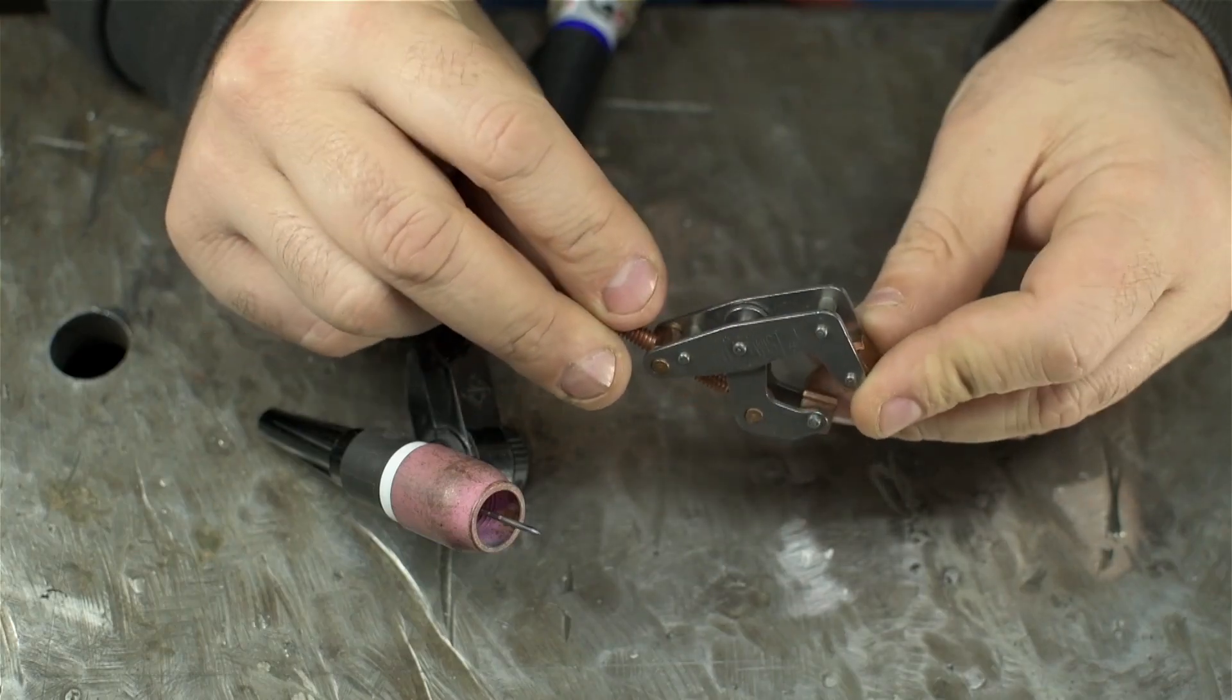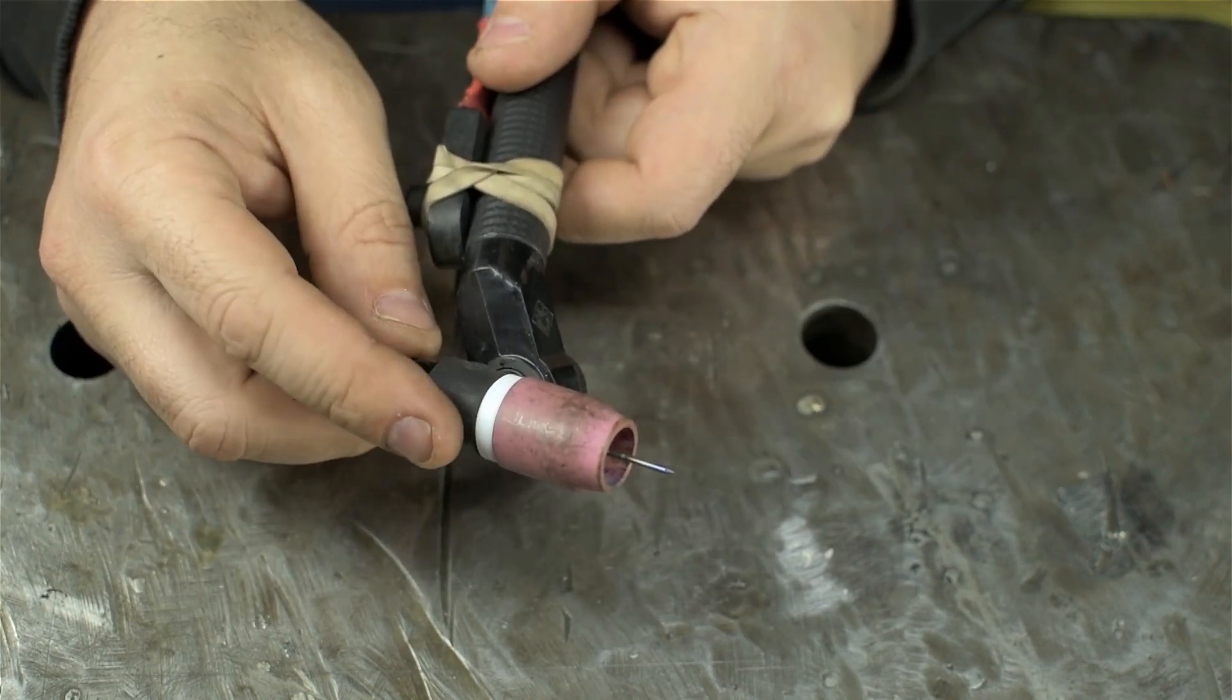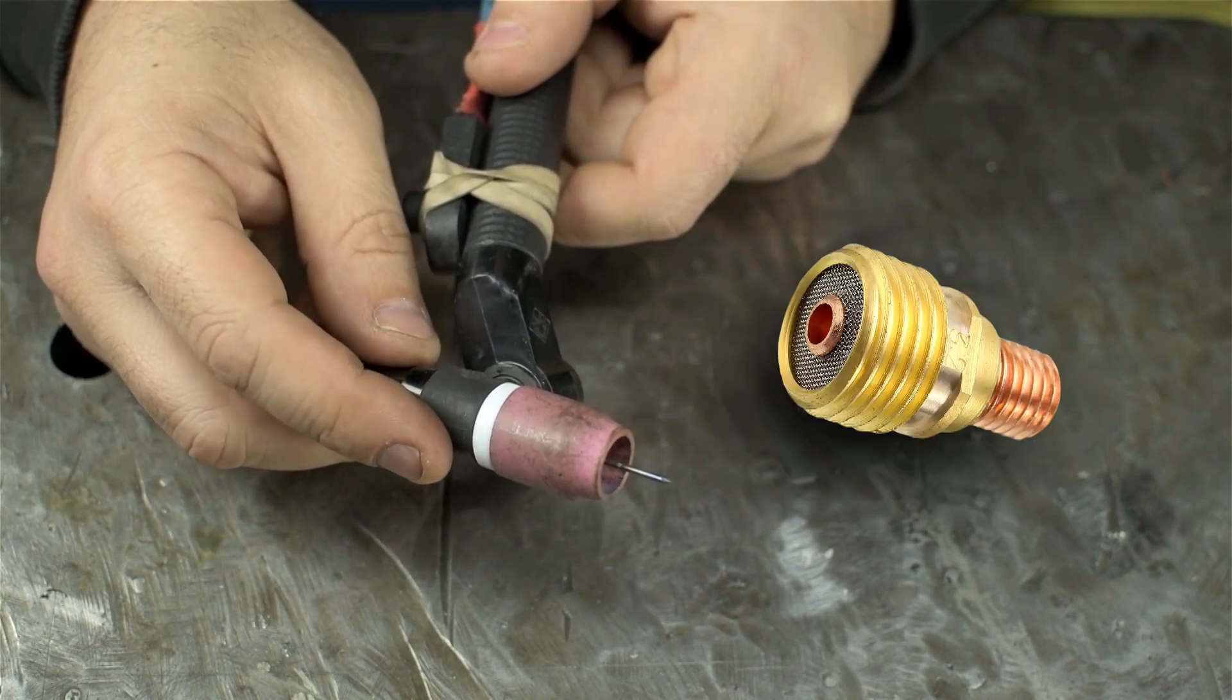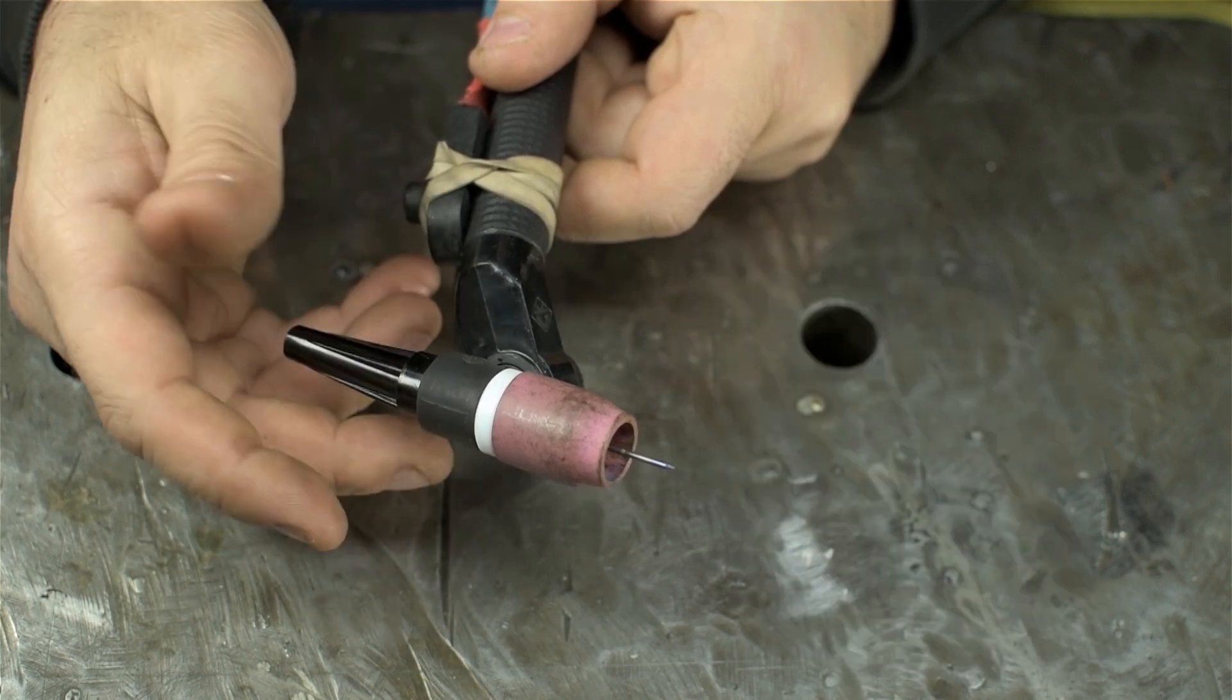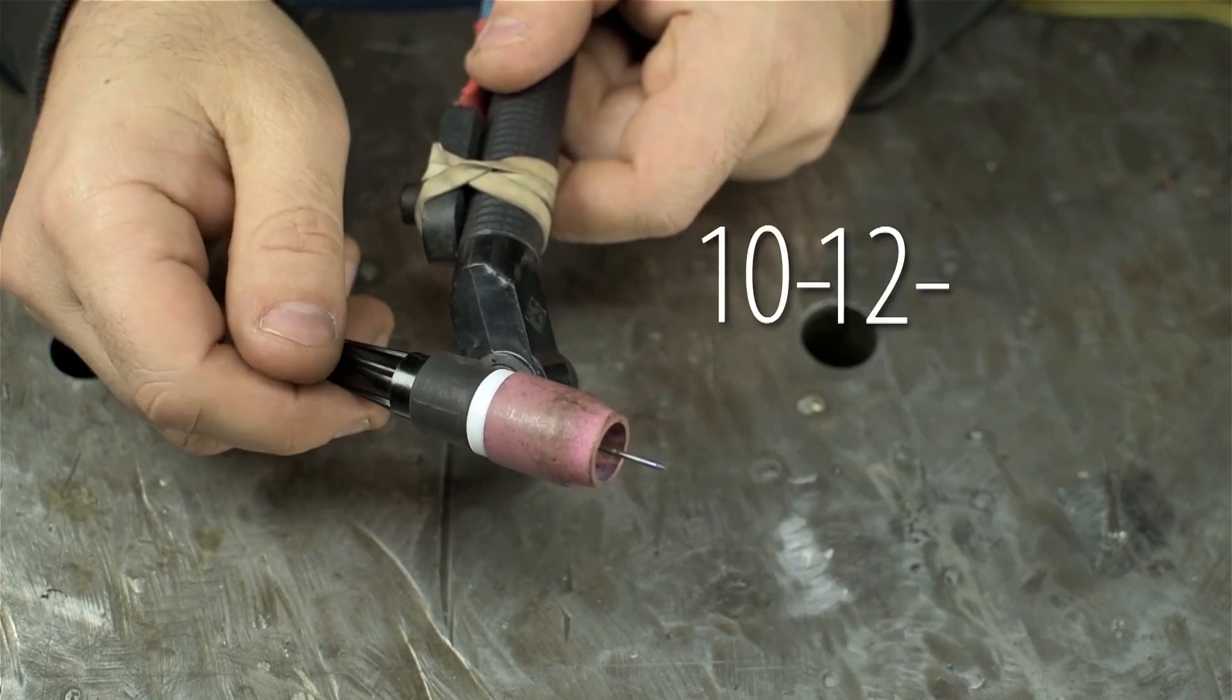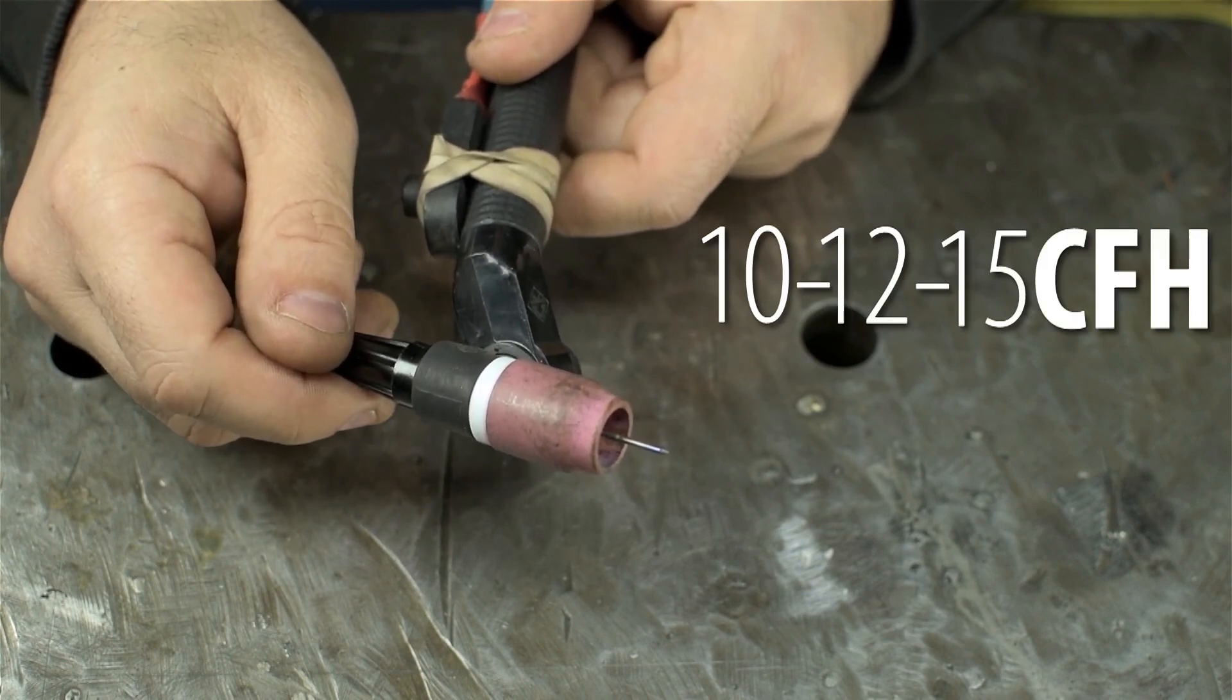This is a one-inch can't twist clamp, but this is a number 8 cup. I happen to be using a gas lens, but that's not important, although flow rates for gas lenses will be different than regular collets.